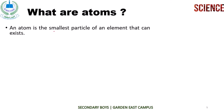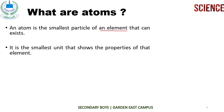Atoms are the smallest particles. An atom is the smallest particle of an element — it is the fundamental particle which is responsible for the characteristics of that element. It is the smallest unit that shows the properties of that element. For example, if gold has unique properties, those properties are due to its atoms. All elements have different characteristics because they have different atoms.